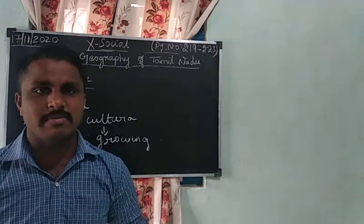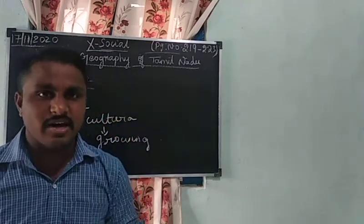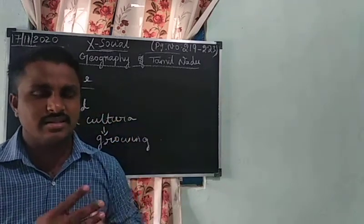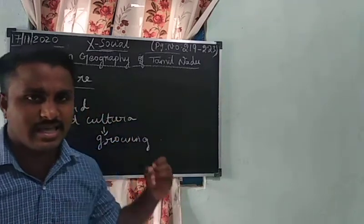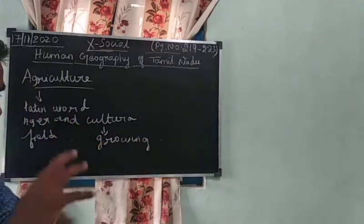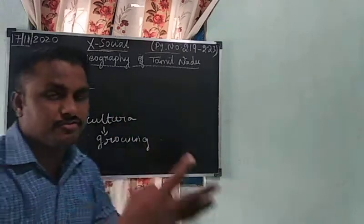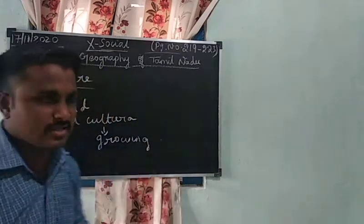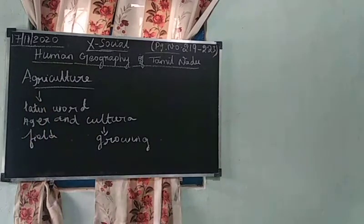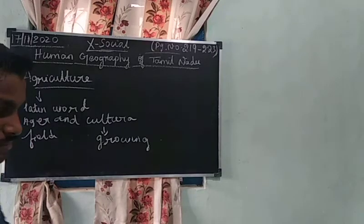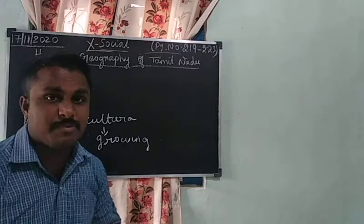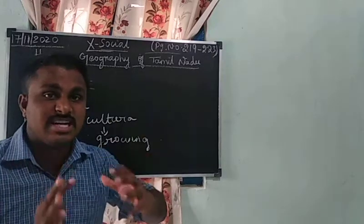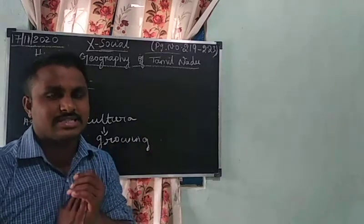Subsistence farming and mixed farming are examples of agriculture. People doing different types of farming are called farmers. This agriculture is mostly done by rural people — village people only — doing agriculture.